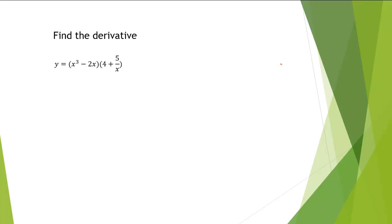Once again, since we're finding the derivative of a product, we'll use the product rule. The product rule states that the derivative of a product, u times v, is equal to u prime times v plus v prime times u. We're given u and v as the factors from our problem. We'll set u equal to x cubed minus 2x, and v equal to 4 plus 5 over x.